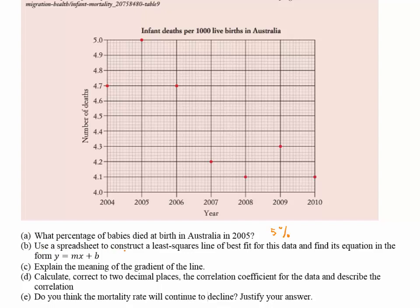Part B says use a spreadsheet to construct a least squares line of best fit for this data and find its equation in the form y = mx + b. Part of the course description requires us to be able to do this in an Excel spreadsheet. I'm going to bring up Excel, run through what you would have to do to produce this, and then I'd like all of you to have a go in your own Excel files.